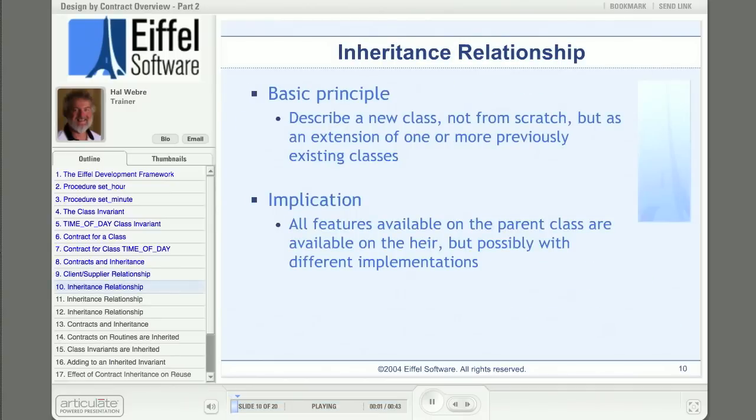When DAILY_ROUTINE applies features of TIME_OF_DAY to instances of TIME_OF_DAY, as in this call to set_hour, the semantics are governed by set_hour's contract. Okay. So much for contracts and client-supplier. Let's move on to inheritance. In inheritance, rather than building a new class from scratch, we extend or specialize one or more existing classes. Eiffel is unique in its support for full, safe, controllable multiple inheritance. But for the purposes of this overview of design by contract, we'll consider only single inheritance. When some class, say AUTOMOBILE, inherits from another class, say VEHICLE, then the features of class VEHICLE are available automatically as features of class AUTOMOBILE. And any instance of AUTOMOBILE can also be considered an instance of VEHICLE.